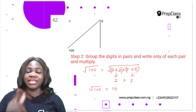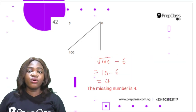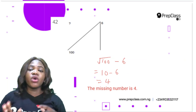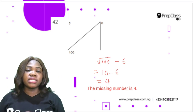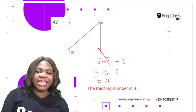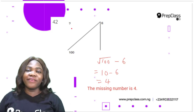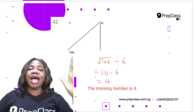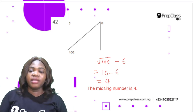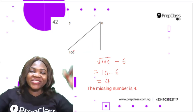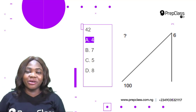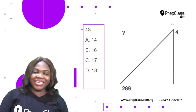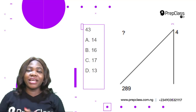Now, √100 − 6 = 10 − 6 = 4. The missing number is 4. To verify: 4 + 6 = 10, and 10 squared is 100 — correct! The correct option is A: 4.